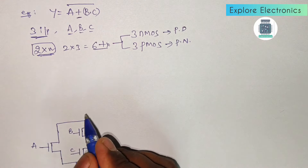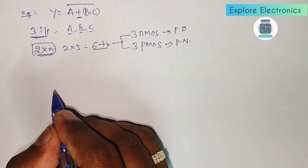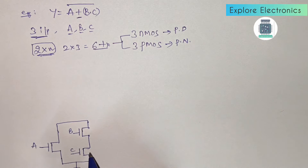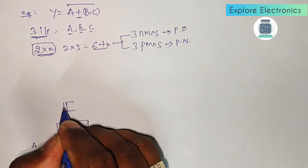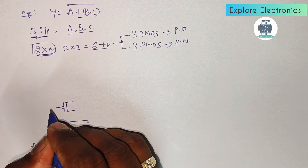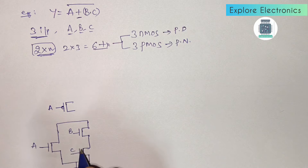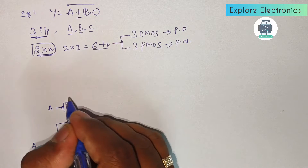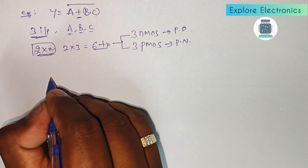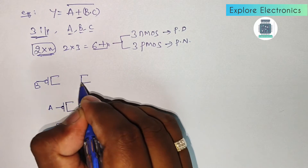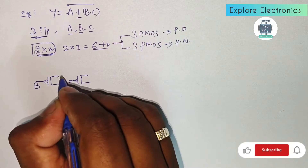To get the complementary output we need a pull-up network with P transistors. In the pull-down, a is in parallel with b·c in series; now in the pull-up we need b and c in parallel, and that will be in series with the a transistor. So first let me take a single a transistor of P type with input a.